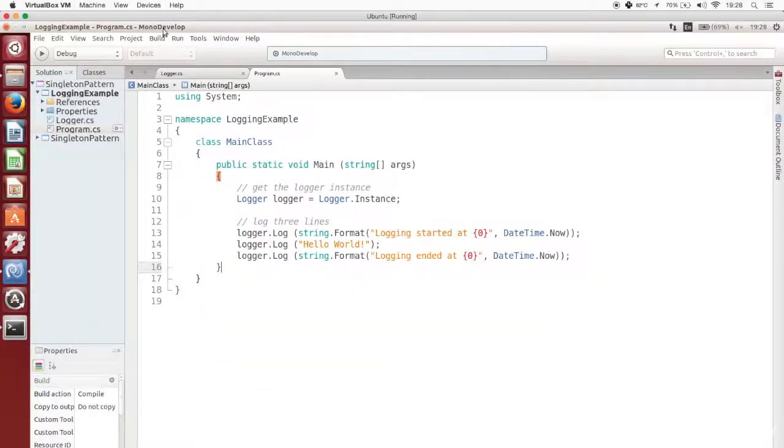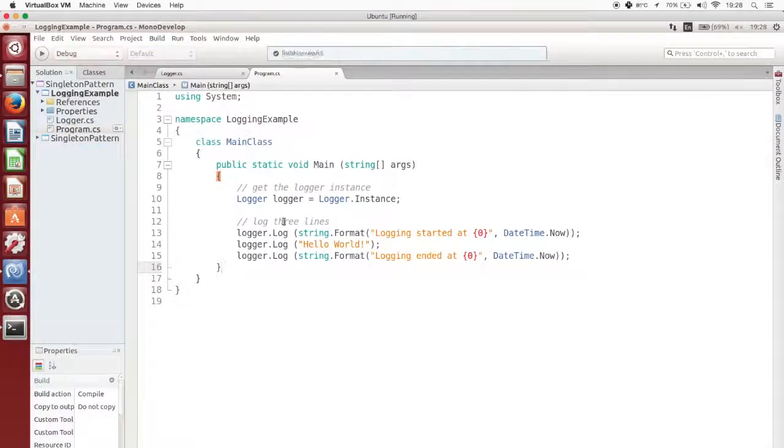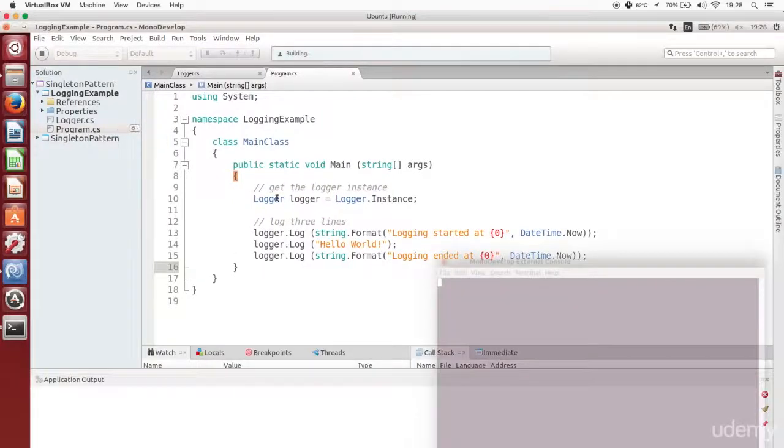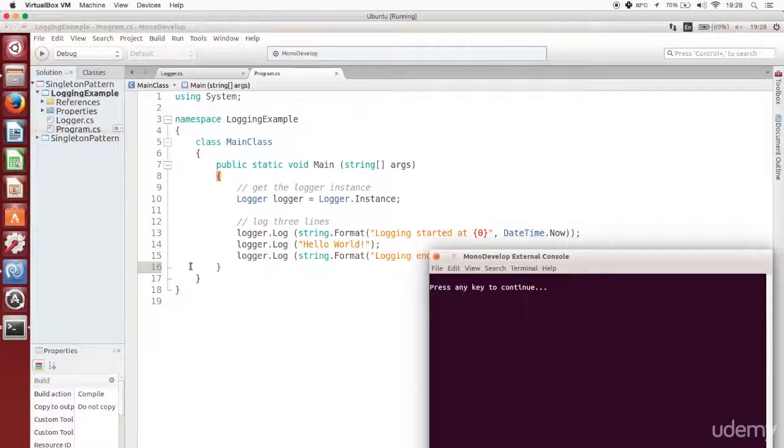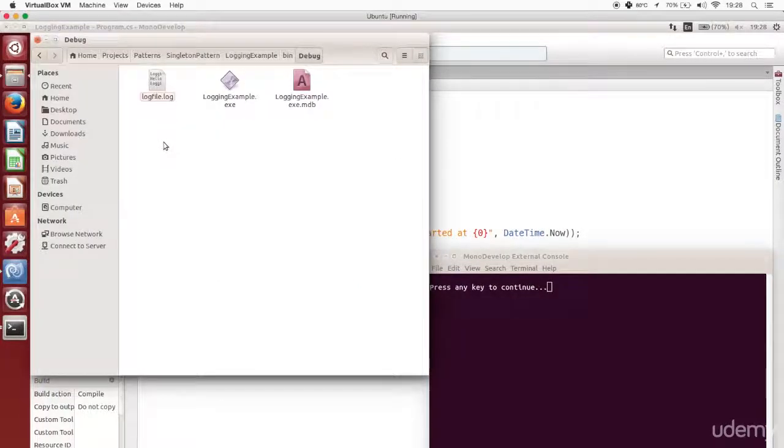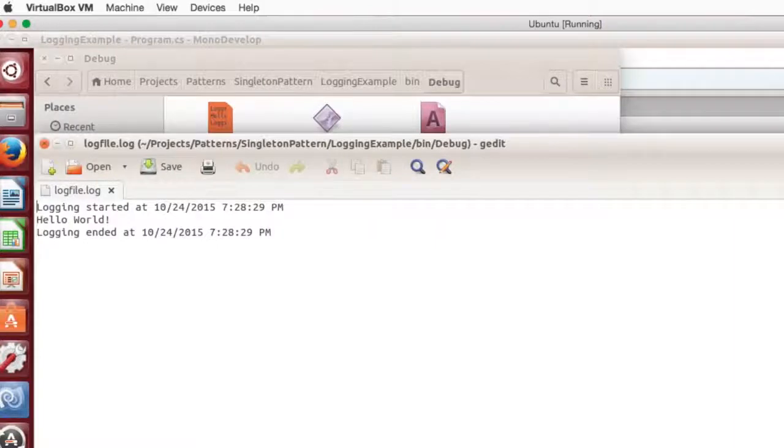Let me run the program to prove that everything is working. I am compiling the code now. And now I am running the program. Okay, so the program has run without errors. The three lines have been written to the log file. So, now I will open a file browser and show you the bin slash debug folder where we will find the log file. And here it is. And you can see that the three log lines are there. Everything works.